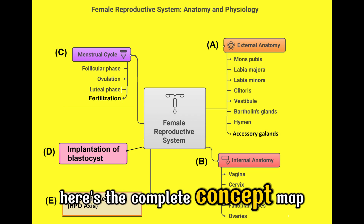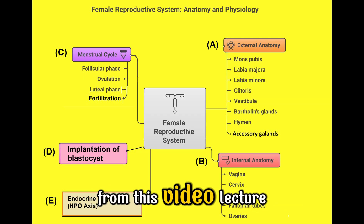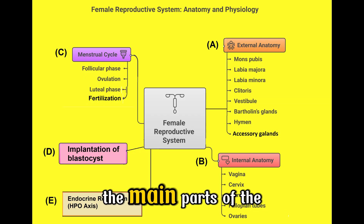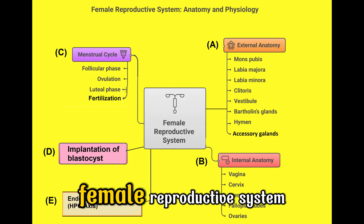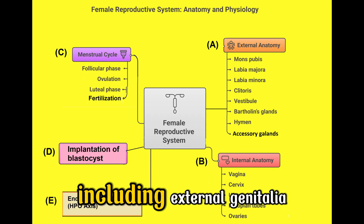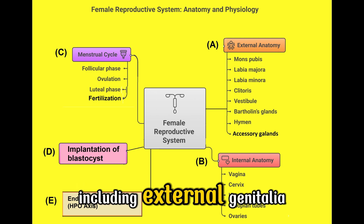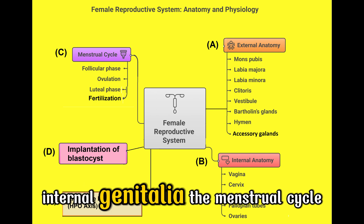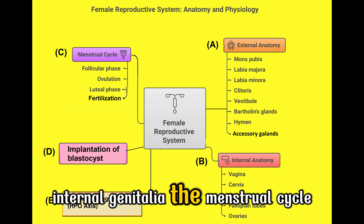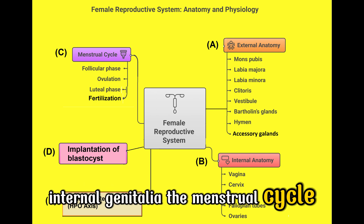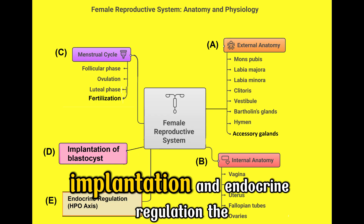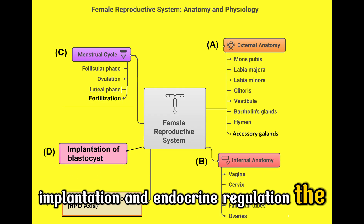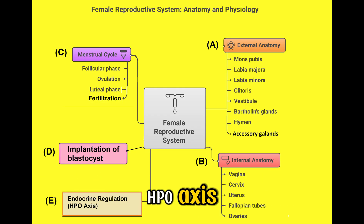Here is the complete concept map from this video lecture. It covers the main parts of the female reproductive system, including external genitalia, internal genitalia, the menstrual cycle, fertilization, implantation, and endocrine regulation — the HPO axis.